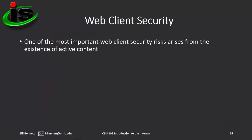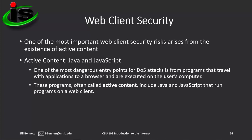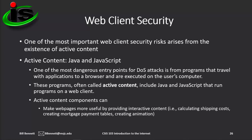One of the most important web client security risks arises from the existence of active content. One common entry point for DoS attacks is from programs that travel with applications to a browser and are executed on the user's computer. These programs, often called active content, include Java and JavaScript programs that run on a web client. Active content components can make web pages more useful by providing interactive content — for example, calculating shipping costs, creating mortgage payment tables, or creating animation — but they can also be used for malicious purposes.